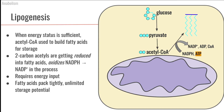So instead, what we're going to do is take that acetyl CoA and it's going to go through a series of chemical reactions where we take those two carbons and add two carbons at a time to build a fatty acid. That's the process of lipogenesis.